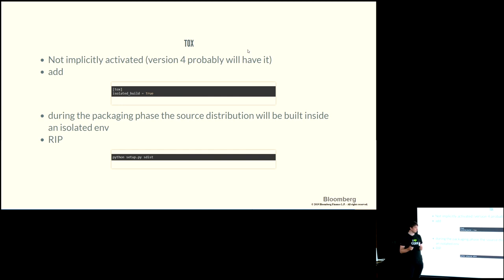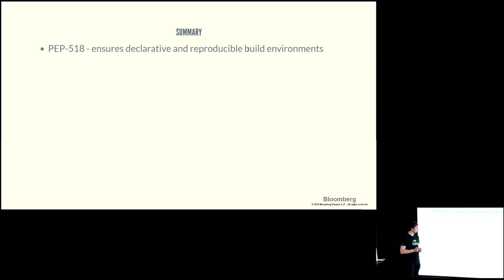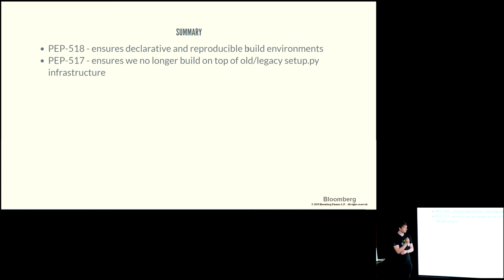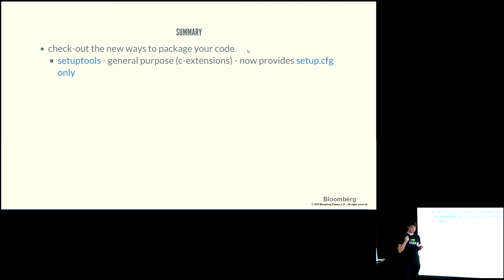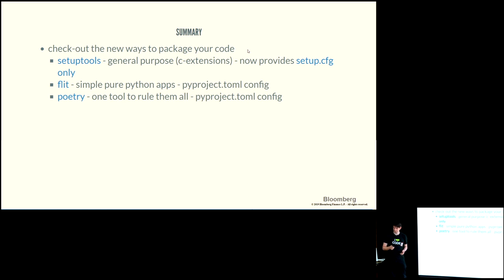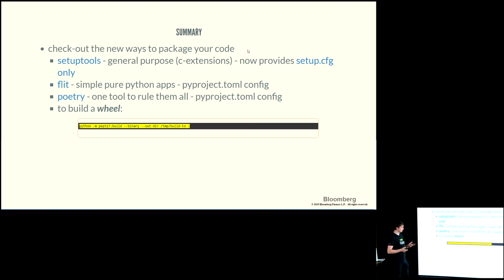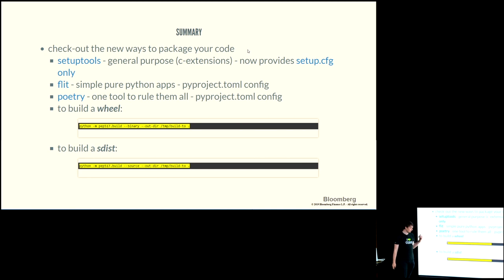To summarize the benefits: you get reproducible, declarative builds; no more need for setup.py (at least once editable installs are ironed out); and things should be a lot simpler. PEP 518 and 517 together ensure we no longer need legacy setup.py and that we have declared reproducible build environments. Going forward, consider using flit or poetry for simple use cases — they're simpler and harder to get wrong. Reserve setuptools especially in setup.py format for complicated or advanced cases. Use the PEP 517 library to build your source distributions and wheels so correct dependencies are automatically pulled in.